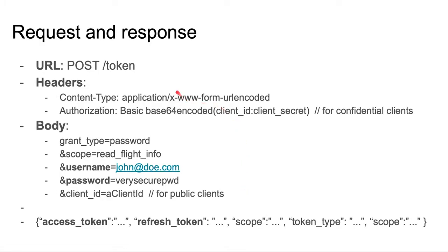A typical request is sent to the token endpoint using POST. The content type is form URL-encoded and the client credentials are placed as a base64-encoded string in the authorization header — this is only the case if the client is a confidential client. Alternatively, the client will place the client ID as a parameter identifier in the request. The message body also includes the grant type 'password', a scope value, the username, and the password of the current user.